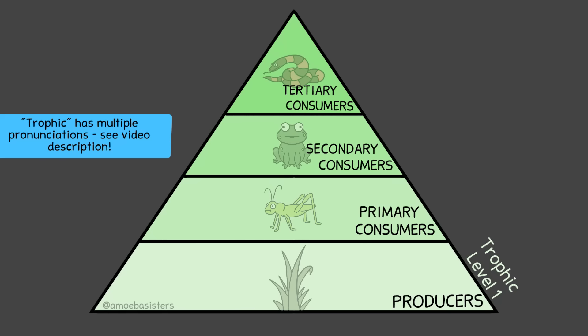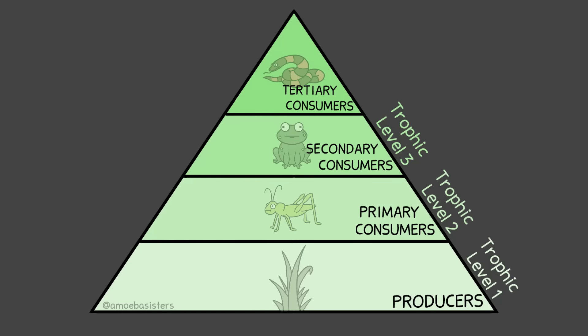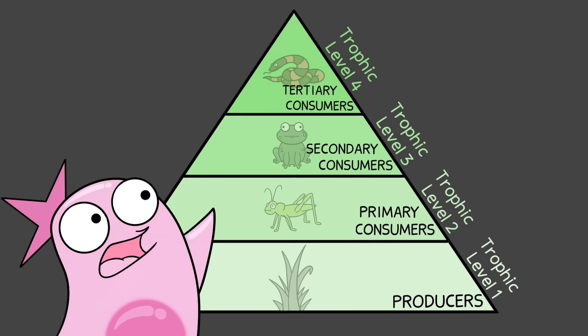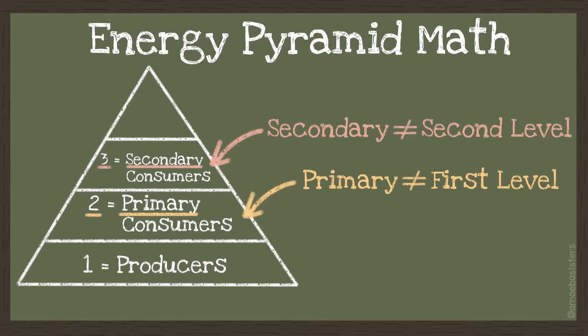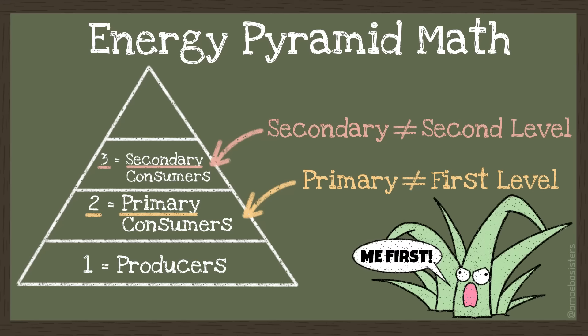Producers occupy trophic level 1, which means primary consumers occupy trophic level 2, secondary consumers have trophic level 3, and tertiary consumers have trophic level 4. Students often get confused by these terms — they see 'primary' and think that would be the first trophic level, or that 'secondary' must be the second. Remember: producers are on trophic level 1, and consumers actually begin at trophic level 2.